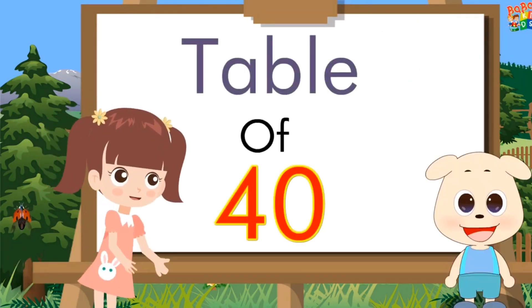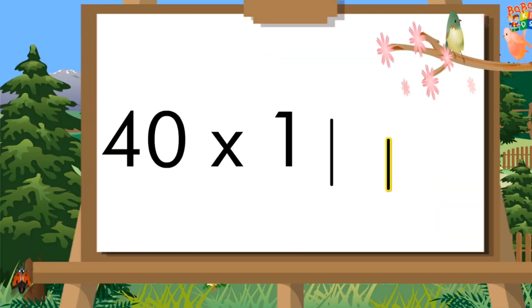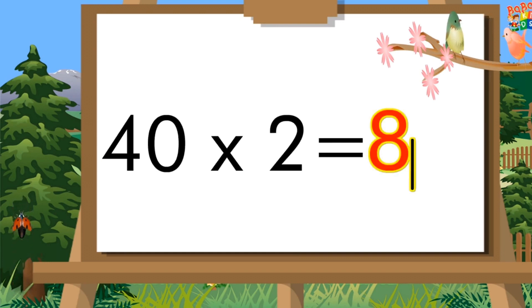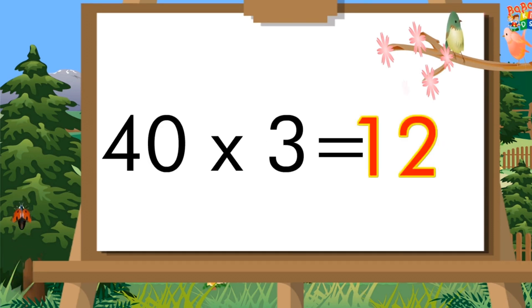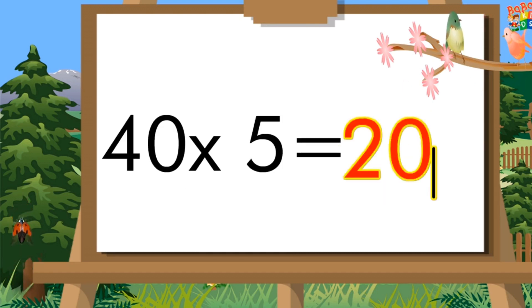Table of 40. 40 1's a 40. 40 2's a 80. 40 3's a 120. 40 4's a 160. 40 5's a 200.